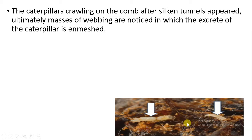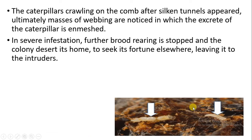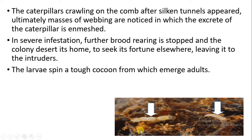When caterpillars are present, they crawl on the comb and produce silk structures, forming tunnels and masses of webbing. Their excreta is also enmeshed in the silk-like structure. All these — Galleria mellonella and Achroia grisella — cause severe infestation, due to which the honeybees desert the hive and move to construct a new hive elsewhere.